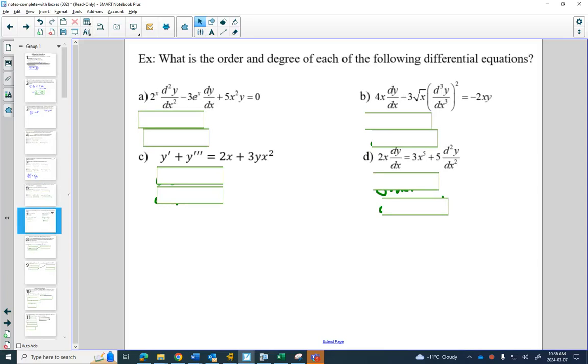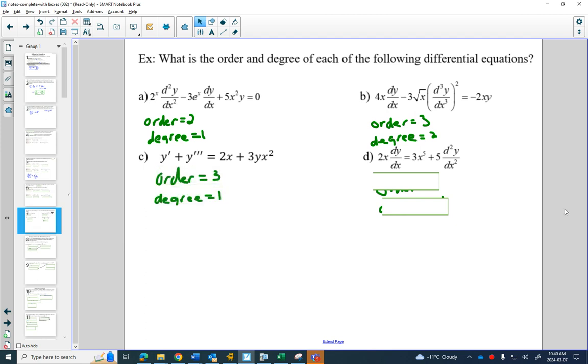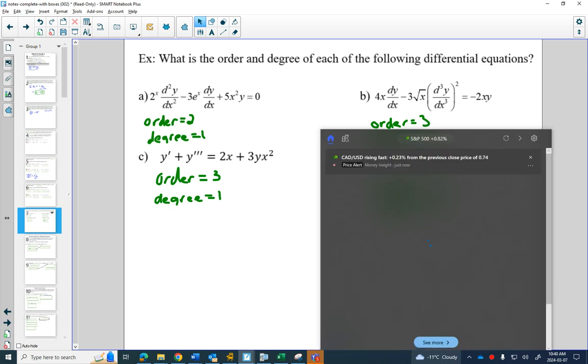So, try these four on your own. I'll put up the answers in a second. All right. How did you do? Order 2, degree 1? Order 3, degree 2? Order 3, degree 1? And finally, order 2, degree 1?